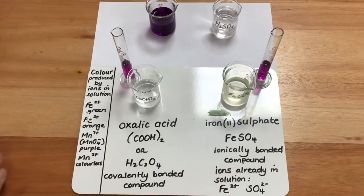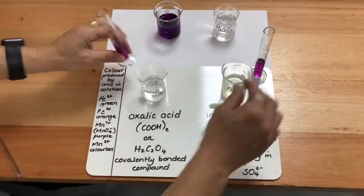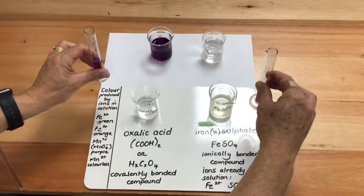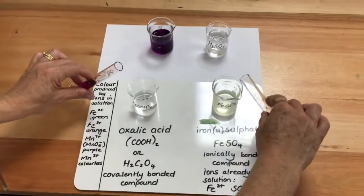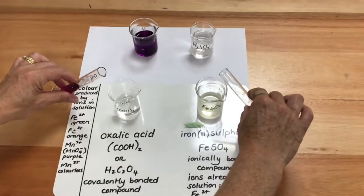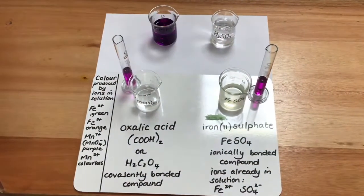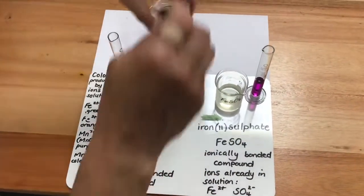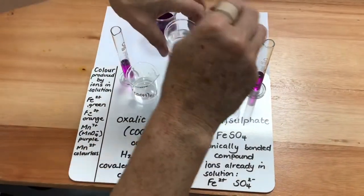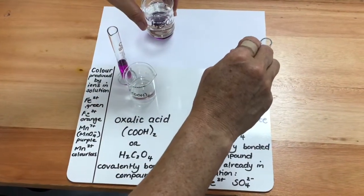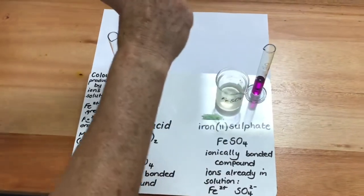I am going to add this potassium permanganate solution to each of these beakers simultaneously. But before I do that, I need to add a few drops of sulfuric acid to each beaker. I am adding 5 drops to each beaker.